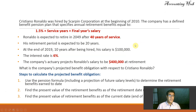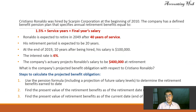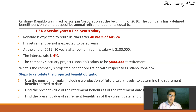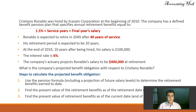Here is our problem. Cristiano Ronaldo was hired by Scarpin Corporation — my fictional company — at the beginning of 2010. The company has a defined benefit plan with this formula: 1.5% times service years times final year salary. He expects to retire in 2049 after 40 years of service. His retirement period is expected to be 20 years. At the end of 2019, ten years after being hired, his salary was $100,000, the interest rate is 6%, and his projected salary at retirement is $400,000.